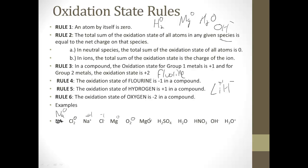Here, oxygen is minus two. Mg is a Group 2 metal, so it's plus two. For H2SO4: SO4 comes from SO4 2 minus, so each hydrogen is going to be plus one. The oxygens — each one is minus two, and since there are four of them, we have a total of minus eight.